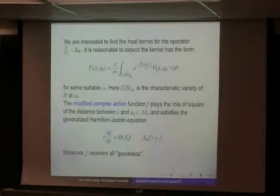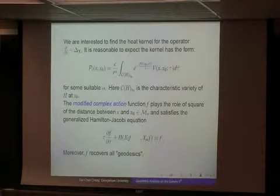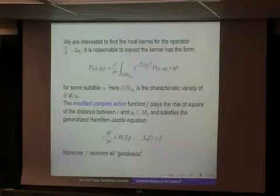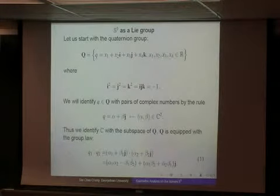This F is quite important. It's similar to what we discussed in the Riemannian case. In the Riemannian case, d squared over 2t is the solution for the Hamilton-Jacobi equation. Here also I want F to satisfy the generalized Hamilton-Jacobi equation. This F will recover all the geodesics. Given any two points with more than one geodesic, I want this F to cover all of them.